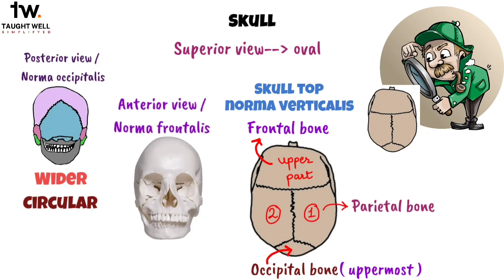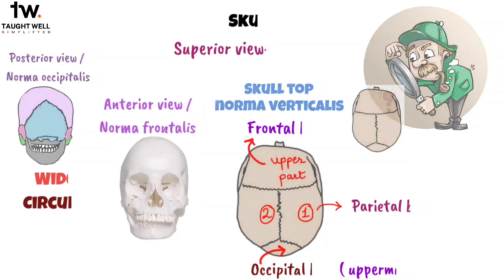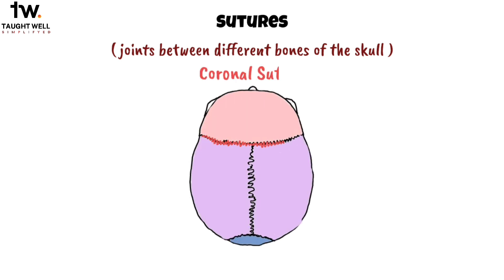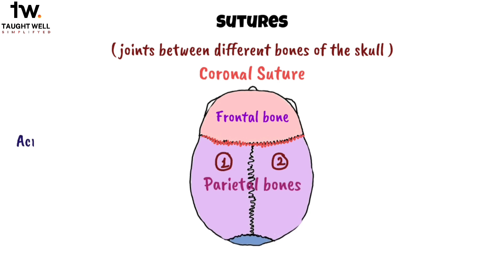Let's discuss the sutures, which are the joints between different bones of the skull. First, we have the coronal suture, placed between the frontal bone and the two parietal bones. It runs across the cranial vault from side to side, moving downwards and forwards.